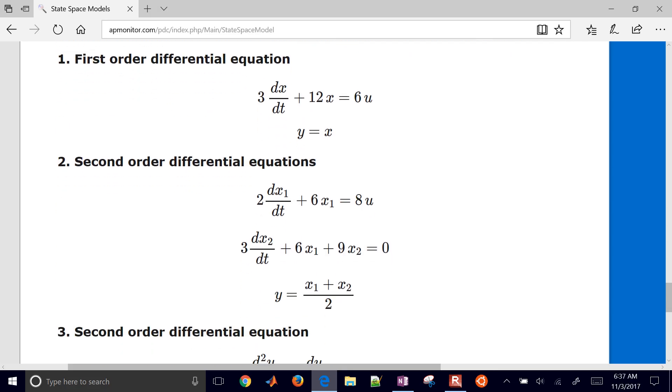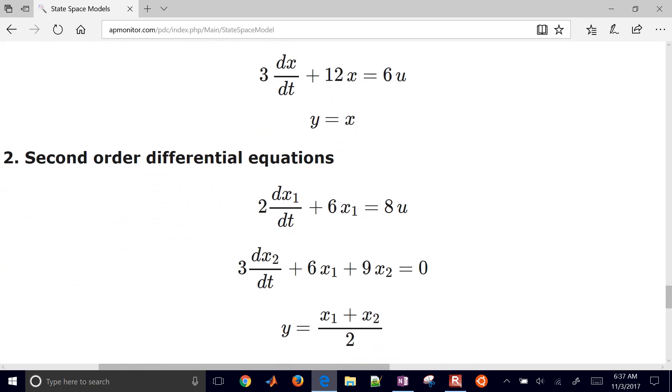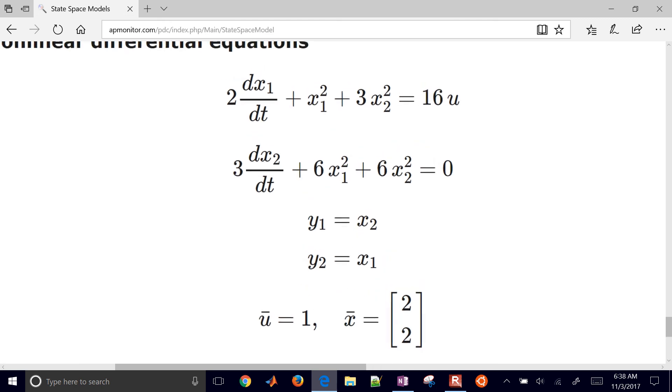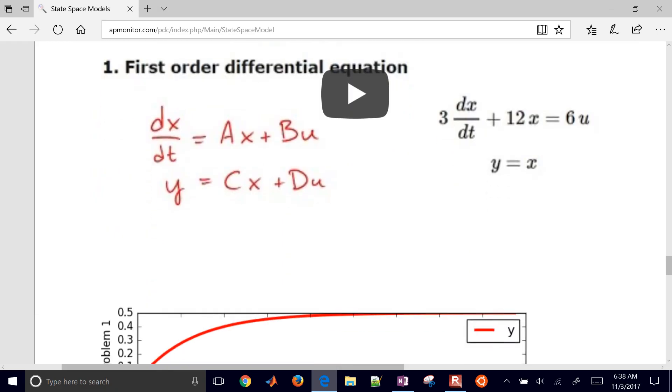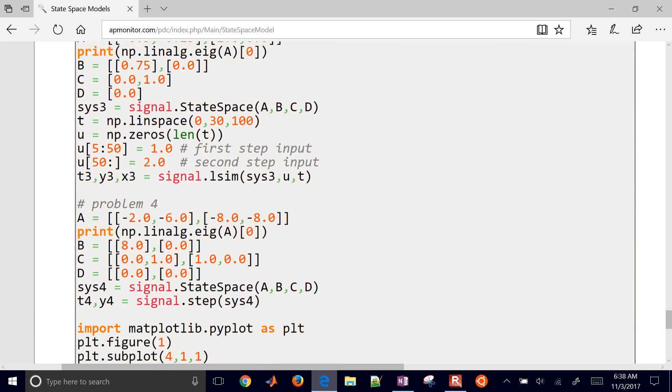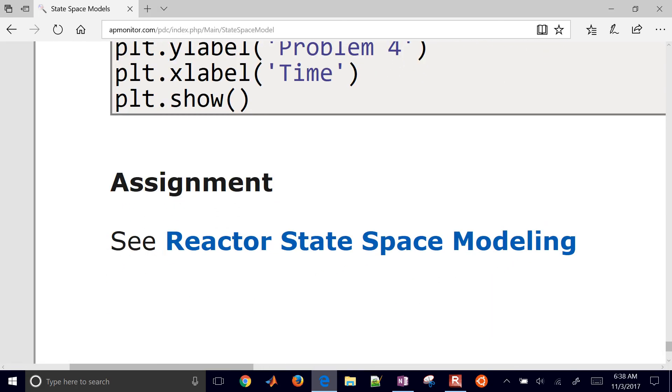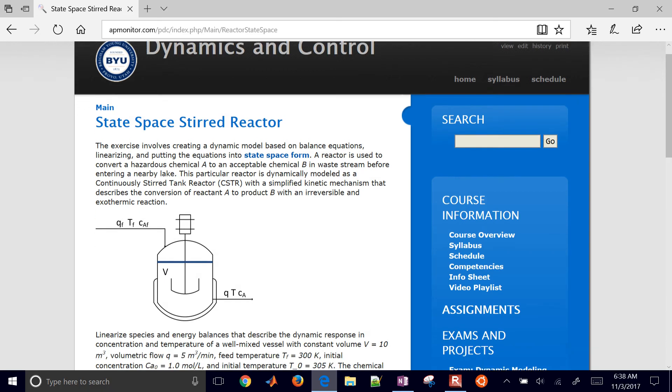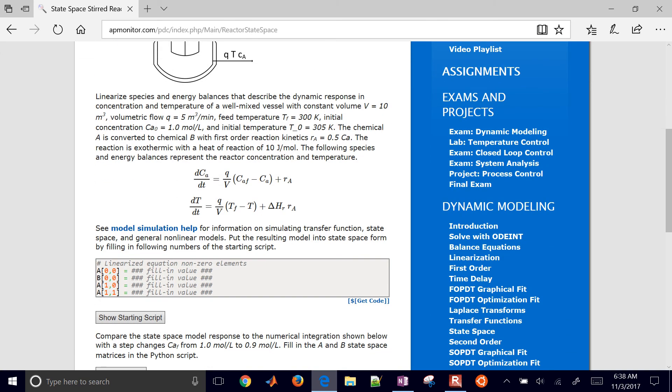Here's the first one, just putting this one into state space form. And then it gradually gets a little bit more complicated. Here's the final one. If you'd like to see the solutions, just select this. There's another video there, and it will show you the solutions with some source code in Python. And then finally, you have the, this is going to be the next exercise that we'll do. This is a state space stirred reactor, and you need to derive the state space model and then simulate it.